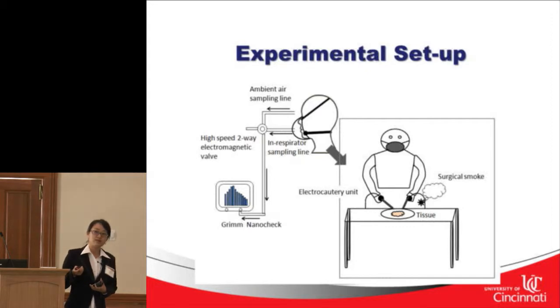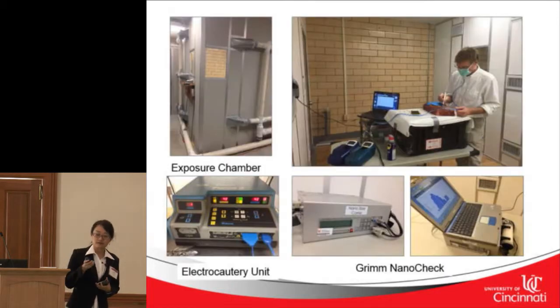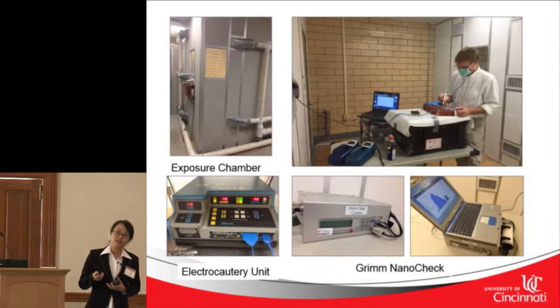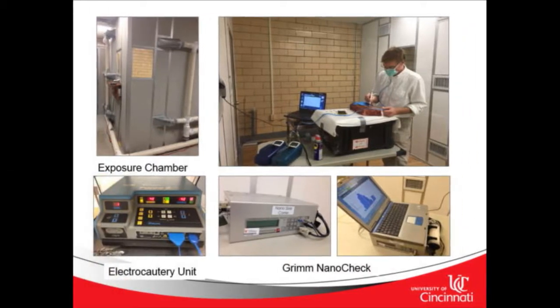Subjects used an electrocautery device applied to the tissue to generate surgical smoke. Particle concentration inside and outside the respirator was measured by a Grimm NanoCheck device. The exposure chamber was totally closed during the experiment, with a researcher standing outside at a control panel to observe what was happening inside. The subject stood in front of the table with animal tissue and used the electrocautery pencil to cut the meat and generate surgical smoke.